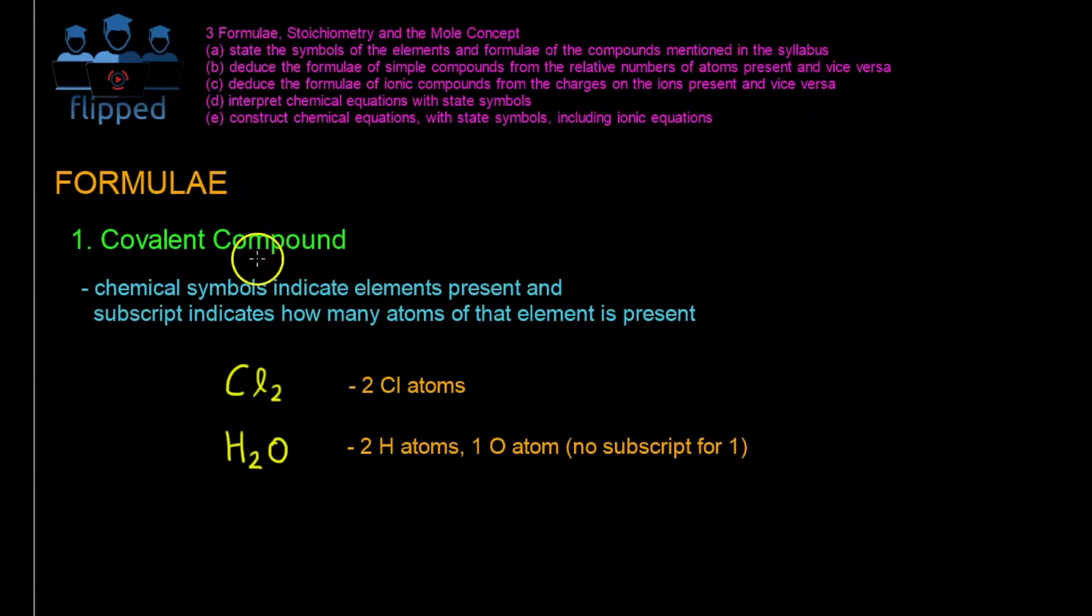We'll start out with covalent compound, which uses chemical symbols to indicate the elements present, and the subscript, which is the smaller number at the bottom, indicates how many atoms of that element are present. In this case it's Cl2, which we know is chlorine, and we can see that there are two chlorine atoms here in this chlorine molecule.